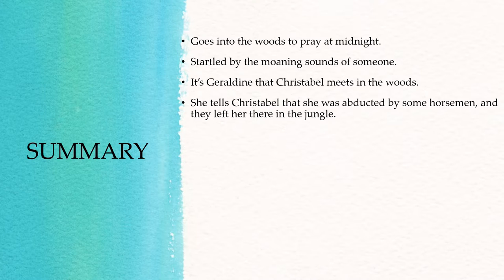Geraldine tells Christabel that she was kidnapped by five horsemen. They kidnapped her the previous morning, tied her on the back of a horse and kept riding for the whole day. Then they left her there in the jungle and threatened her that if she tried to escape they will find her and they are going to come back.